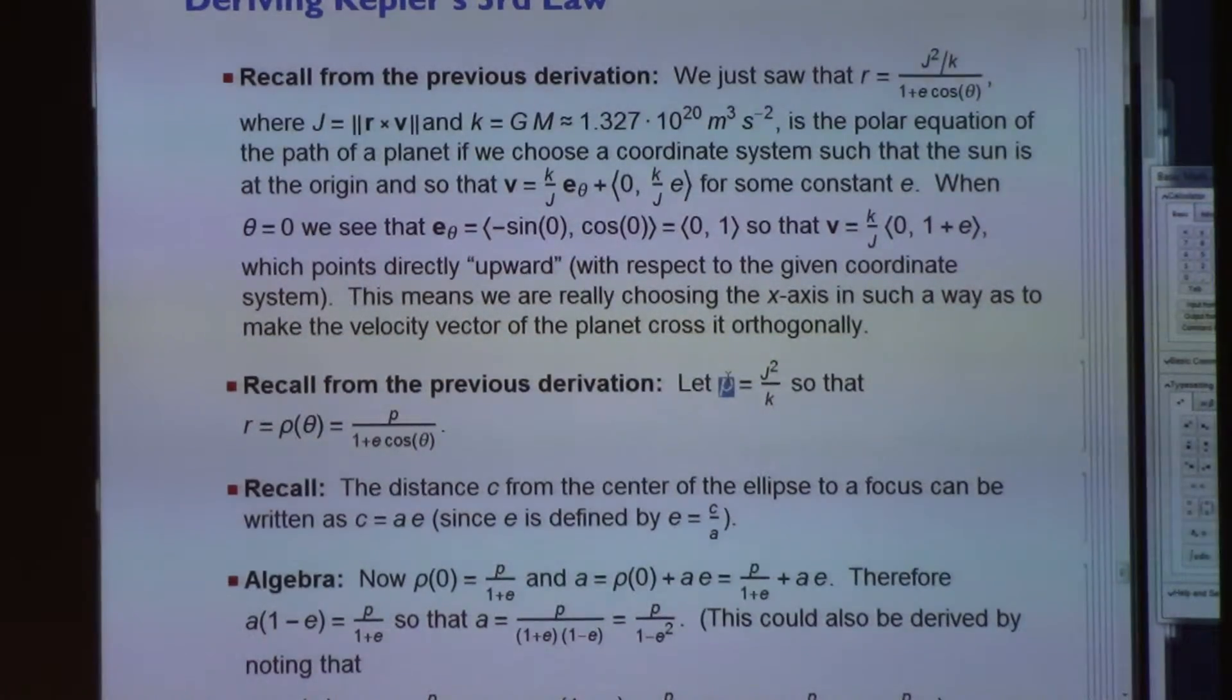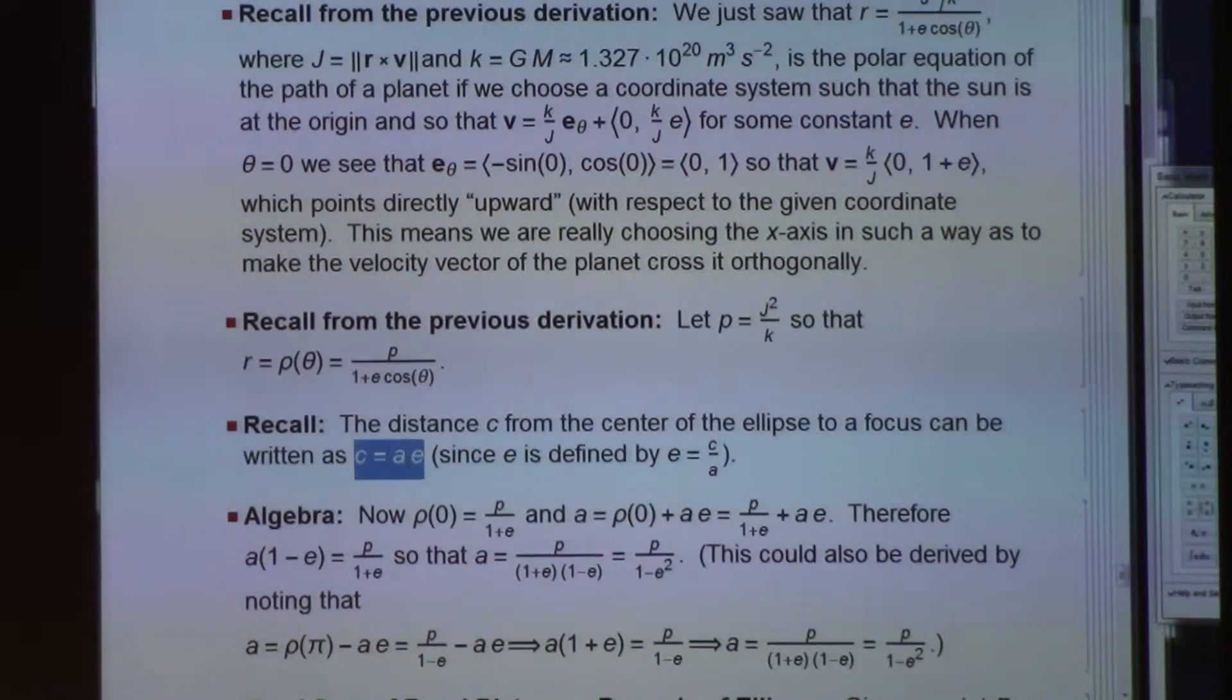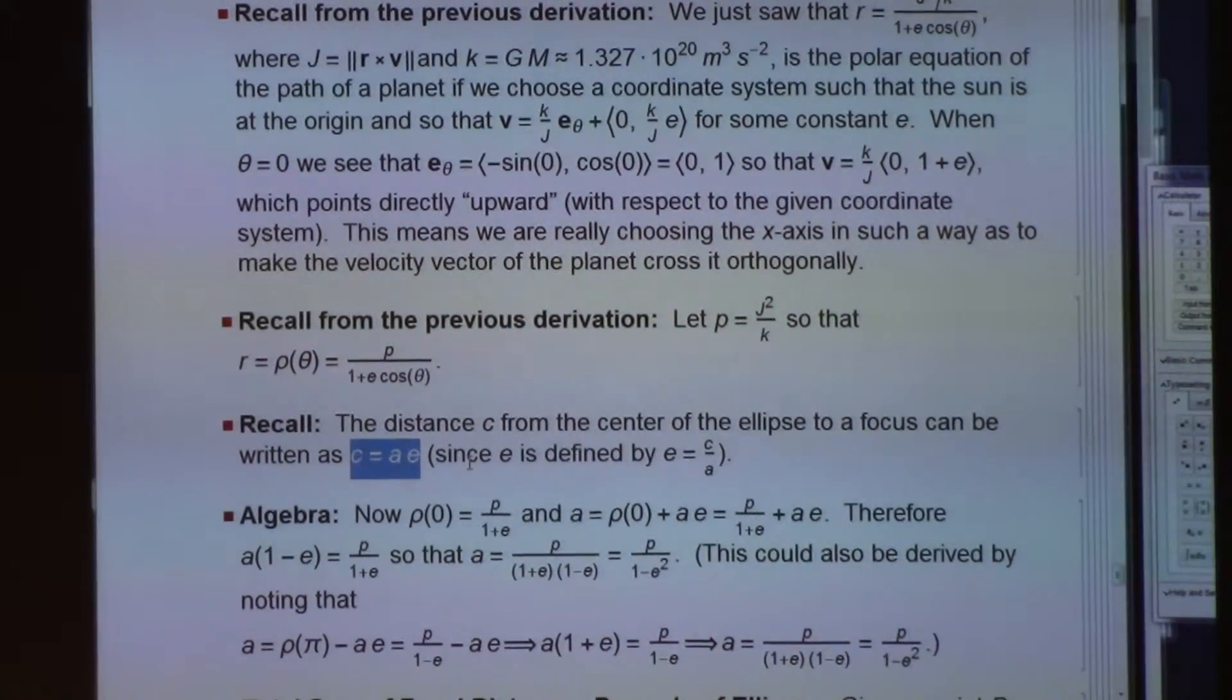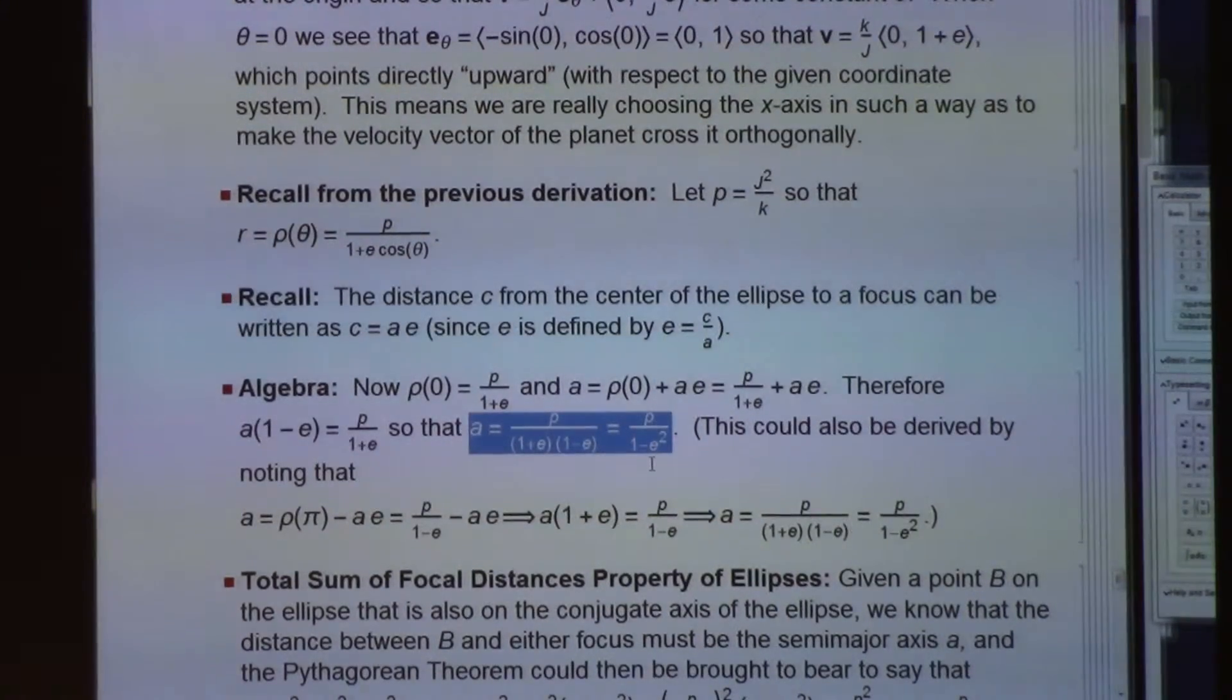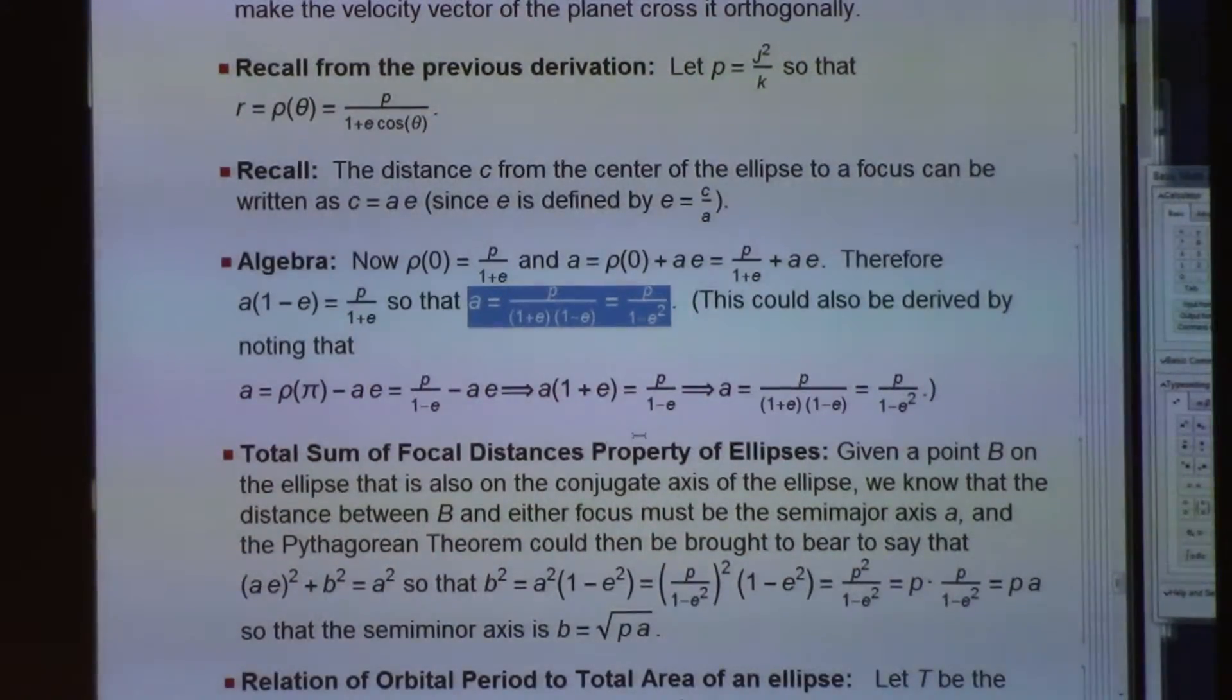We define a new variable called p to be j squared over k, so that we can write the polar equation more simply. We do recall that c does equal a times e, where c, again, is the distance between the center of the ellipse and the focus. Since we define the eccentricity by that equation. And if I call this function rho of theta, I can find rho of 0 and rho of pi, either way, to determine how the semi-major axis depends on p and e. It's just a bunch of algebra here. It's not clear why this should be true other than just following your algebra.